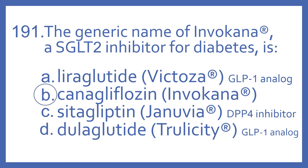Liraglutide is the generic name for Victoza, which is a GLP-1 analog for diabetes — it's injectable. Sitagliptin is the generic name for Januvia, which is an oral medication for diabetes in the DPP-4 inhibitor class.